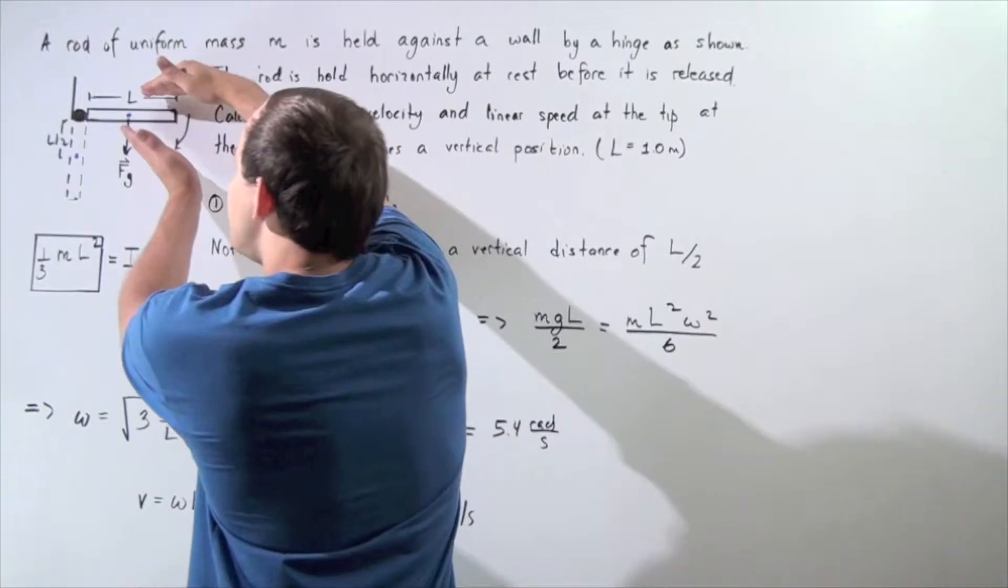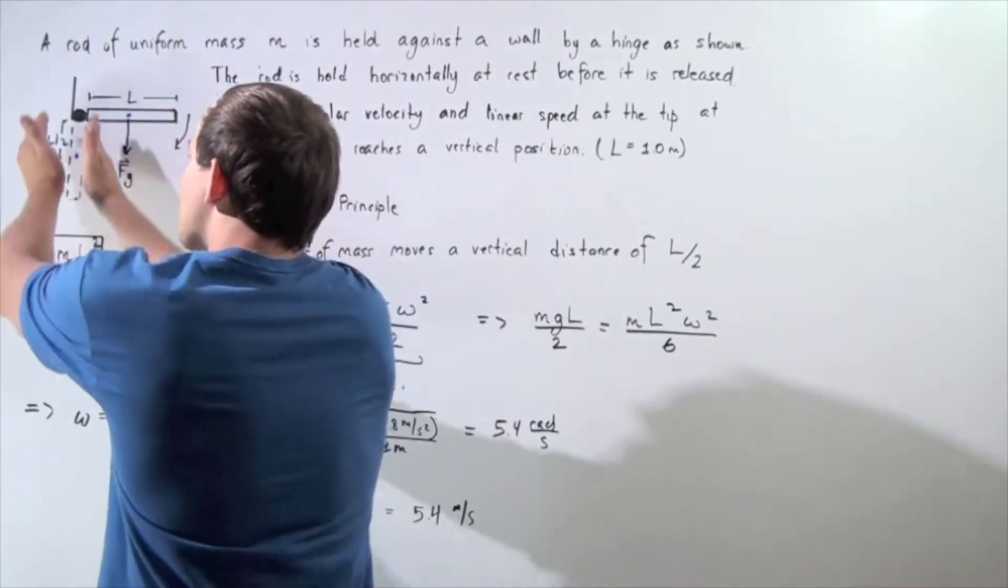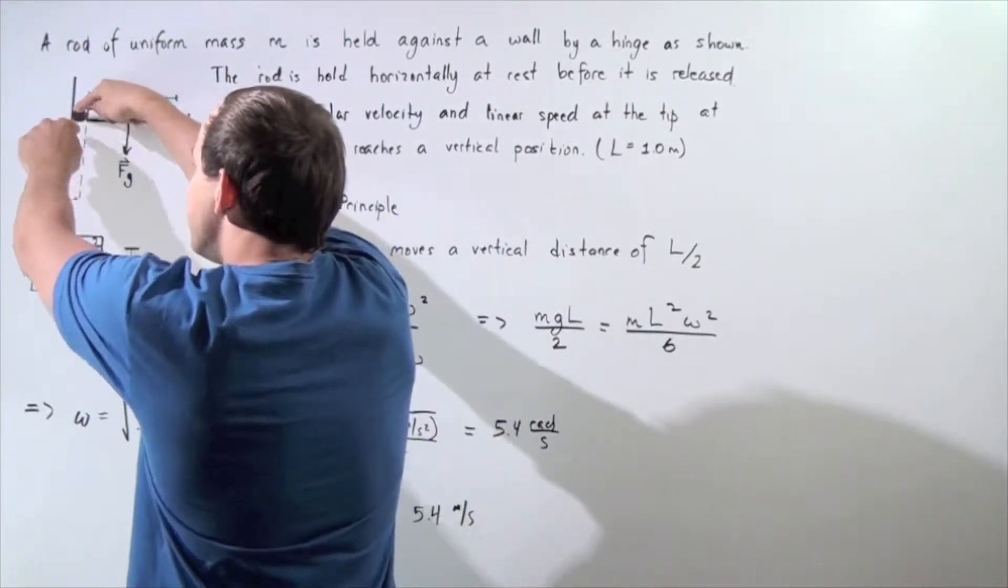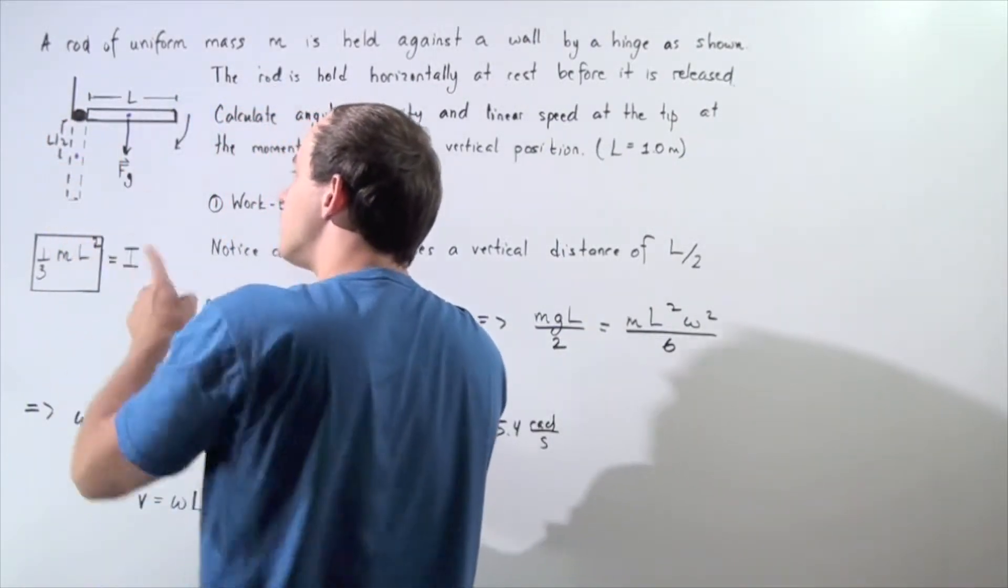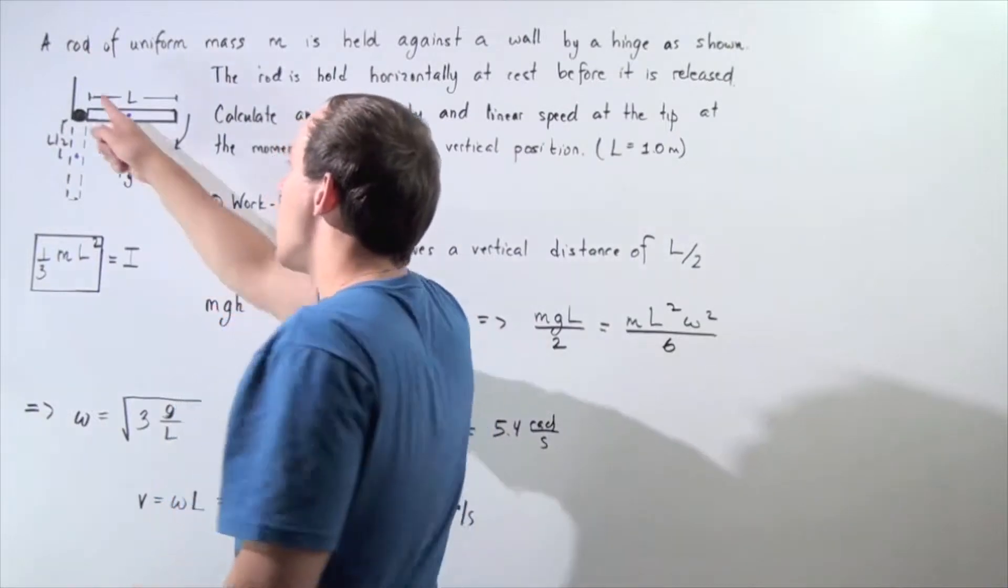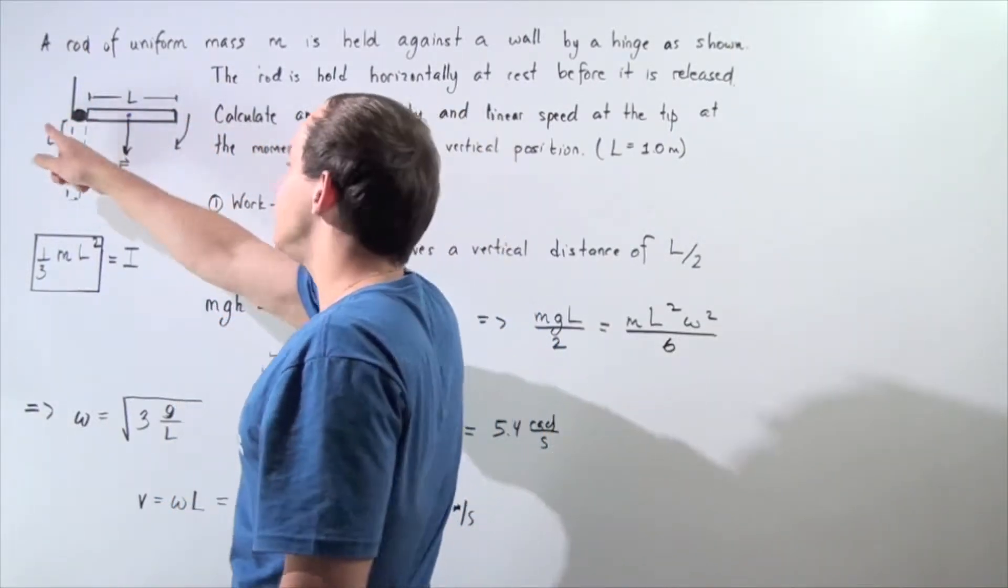Why? Because when the object moves to this vertical position, the distance that it moves is L divided by 2. The distance that the center of mass moves is half of the entire length L divided by 2.